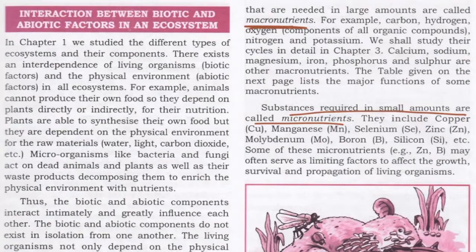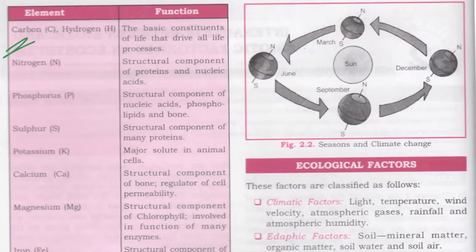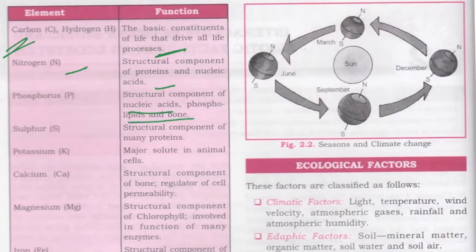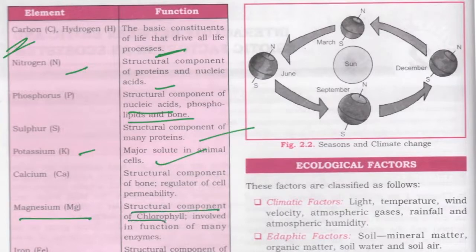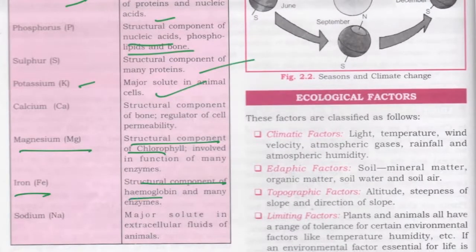The table defines some inorganic substances and their functions. Carbon and hydrogen are basic constituents of life that drive all life processes. Nitrogen is a structural component of proteins and nucleic acids. Phosphorus is a structural component of nucleic acids, phospholipids, and bone. Sulfur is a structural component of many proteins. Potassium is a major solute in animal cells. Calcium is a structural component of chlorophyll. Iron is a structural component of hemoglobin and many enzymes. Sodium is a major solute in extracellular fluids of animal cells.